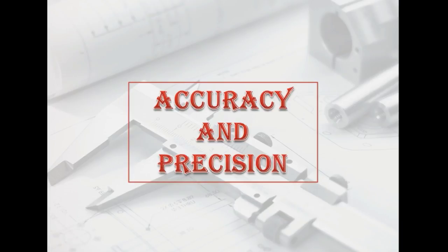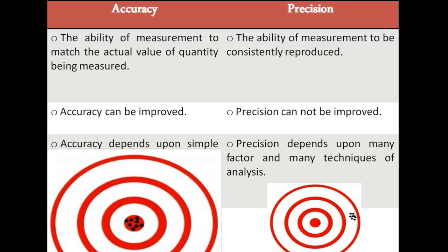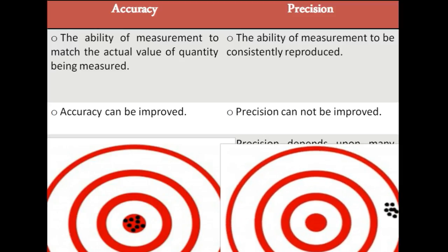After that, we discuss the accuracy and precision. Here you can see the screen having two dartboards. Left side dartboard has a dart strike on the center of the dartboard exactly - that is called the accuracy of the striker. And the right side dartboard has all dart strikes away from the center, but they are close to each other. That is called the precision of the striker.